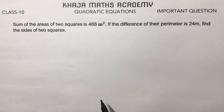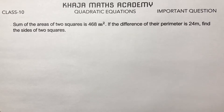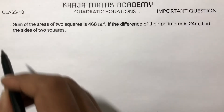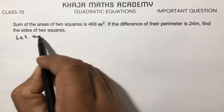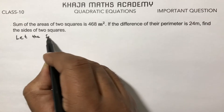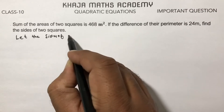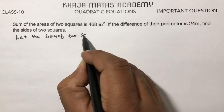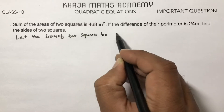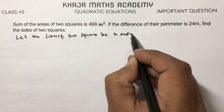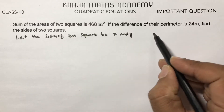The sum of the areas of two squares is 468 square meters. If the difference of their perimeters is 24, find the sides of the two squares. Let the sides of the two squares be x and y.